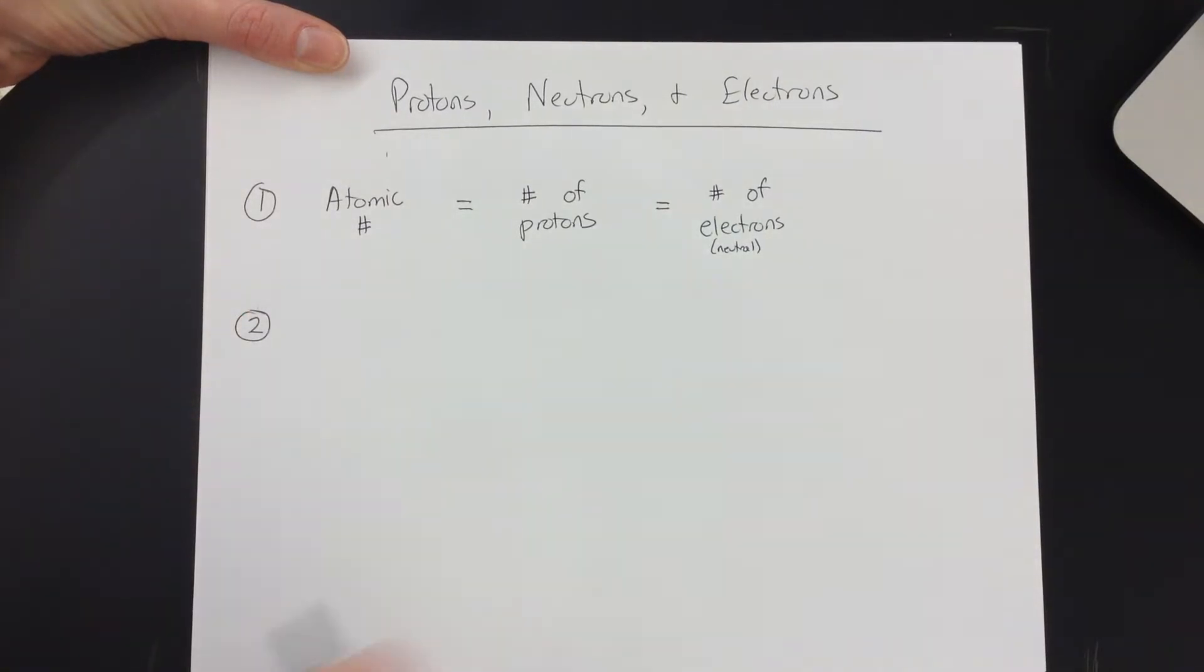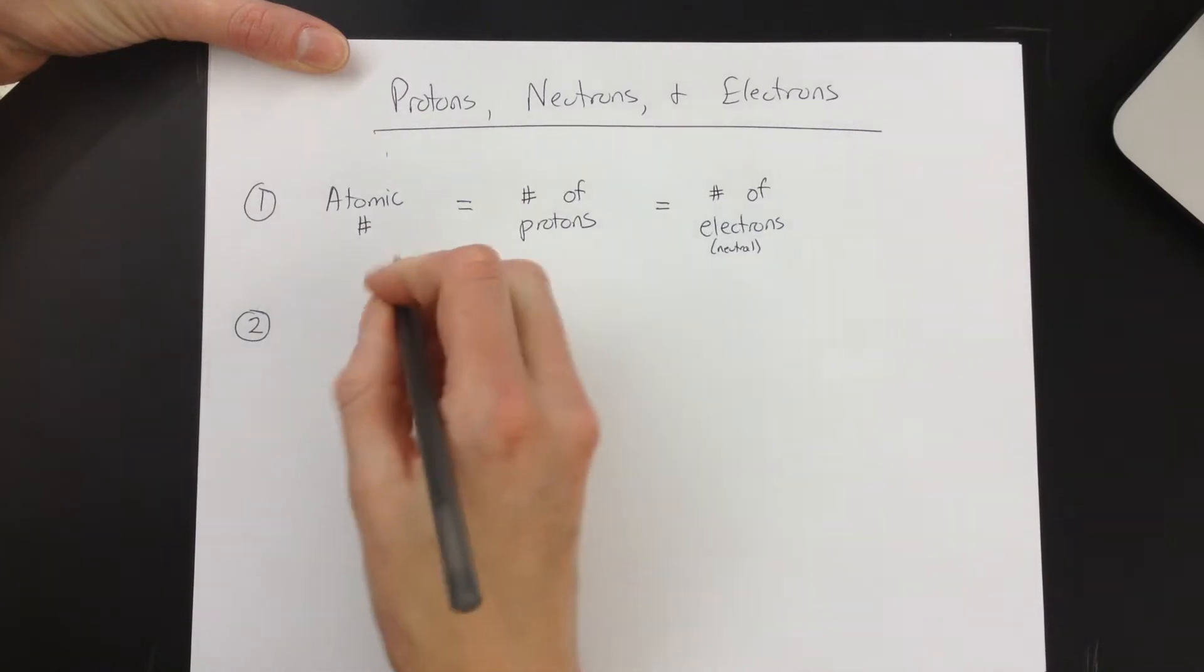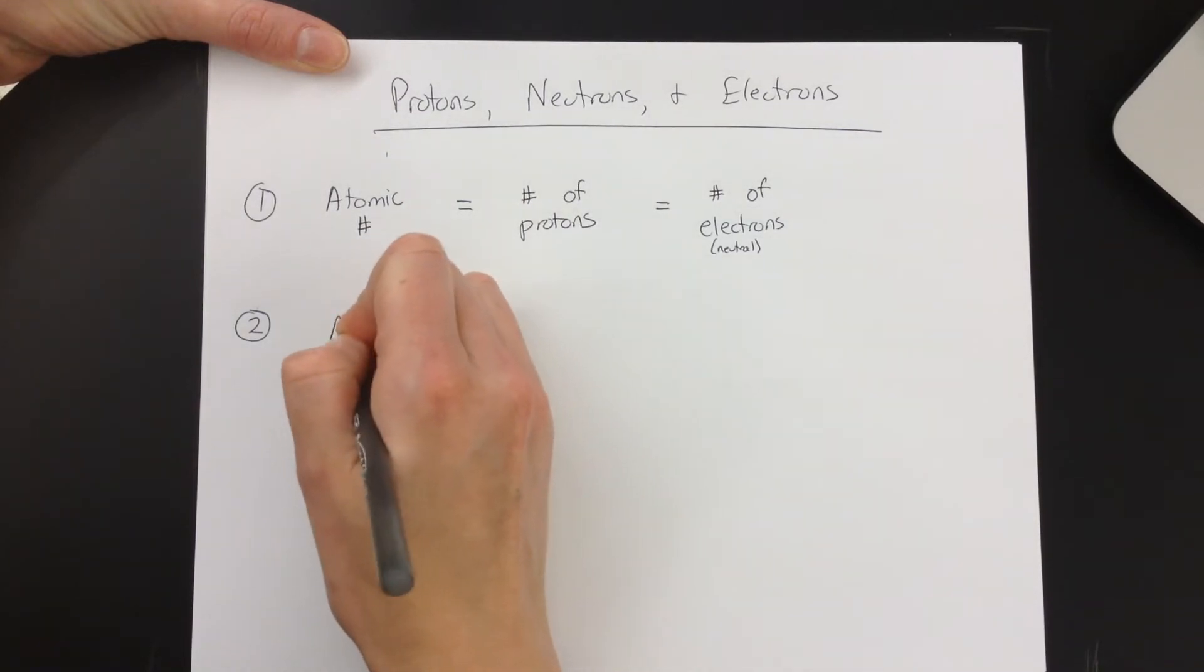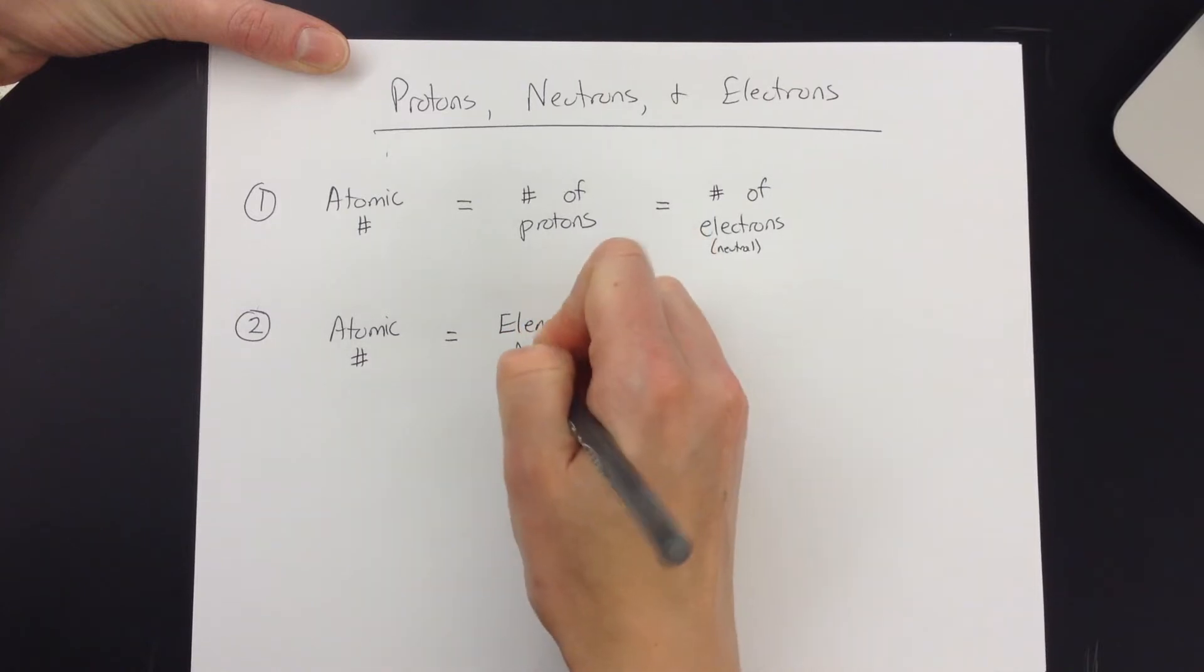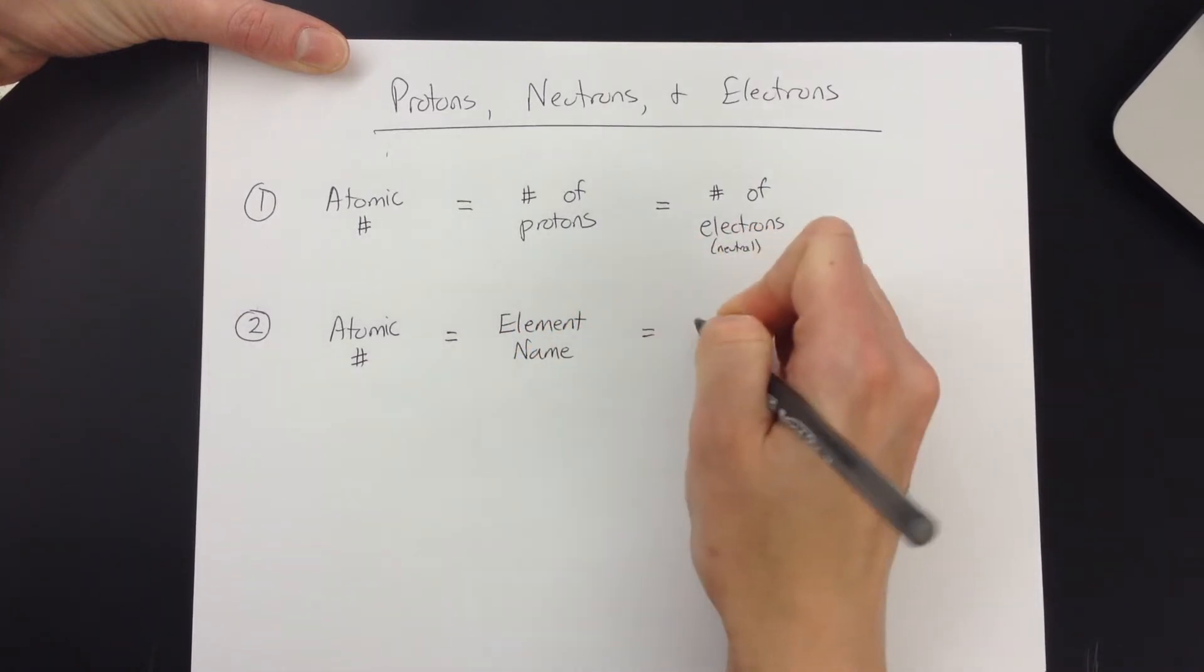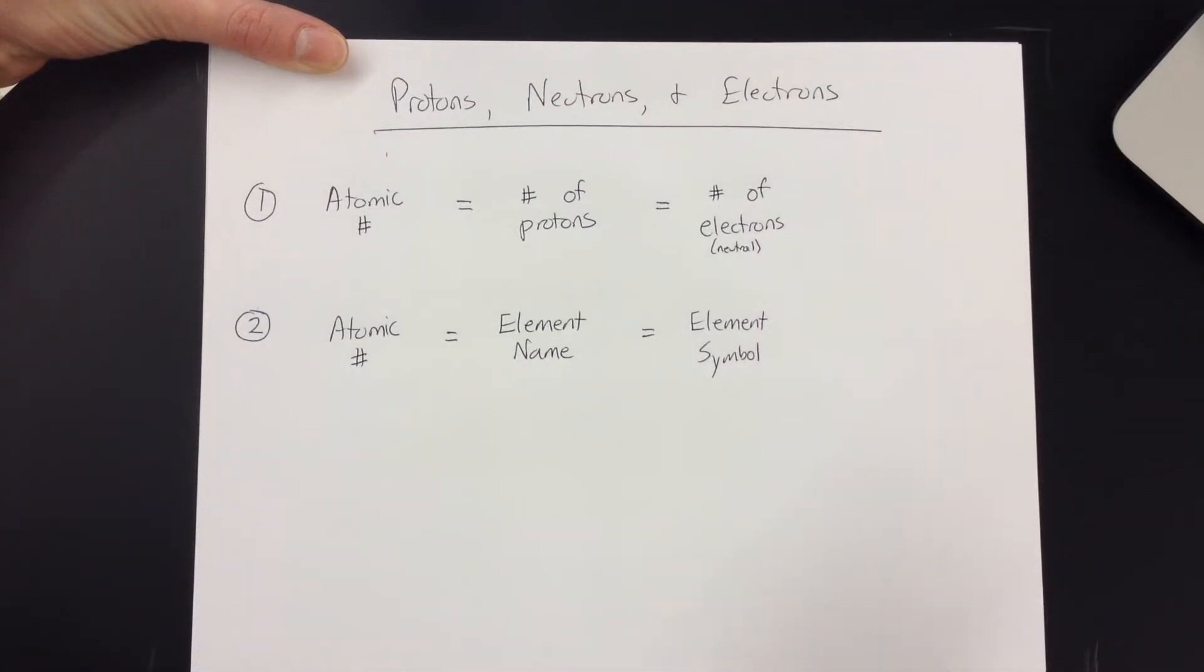So once you have those filled out, or maybe you don't have any of those, so you can't do that one yet, then maybe you need this piece of information. The atomic number comes from the periodic table. All you have to do is either look up the element name or the element symbol.